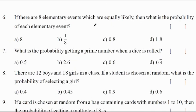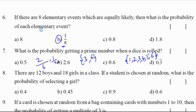If there are 8 elementary events which are equally likely, then what is the probability of elementary event? It will be 1 by 8. What is the probability of getting a prime number when a dice is thrown? So when a dice is thrown, we will get possible outcomes. Prime numbers are 2, 3, 5. So 3 by 6, which is 1 by 2. Correct option is D.